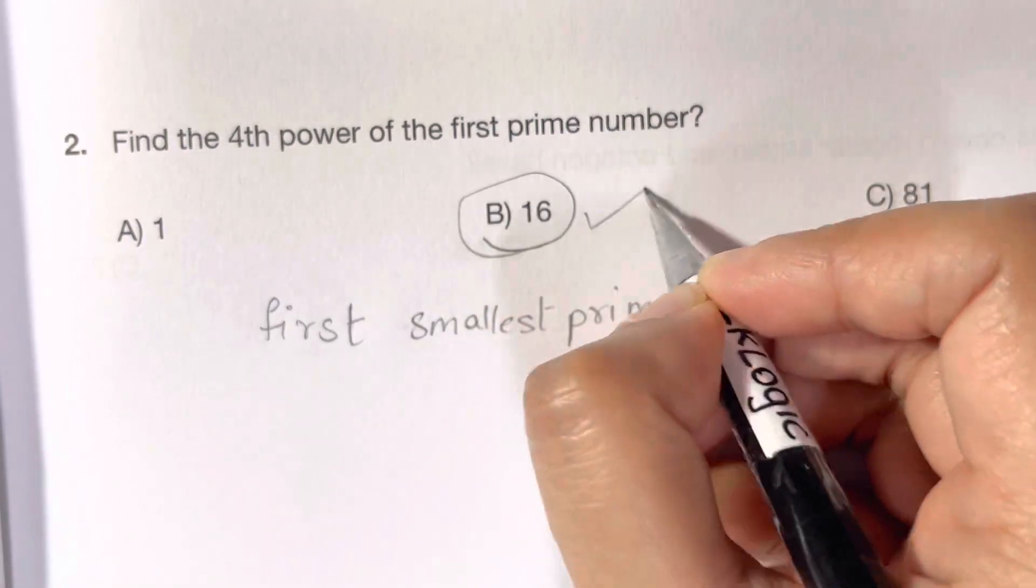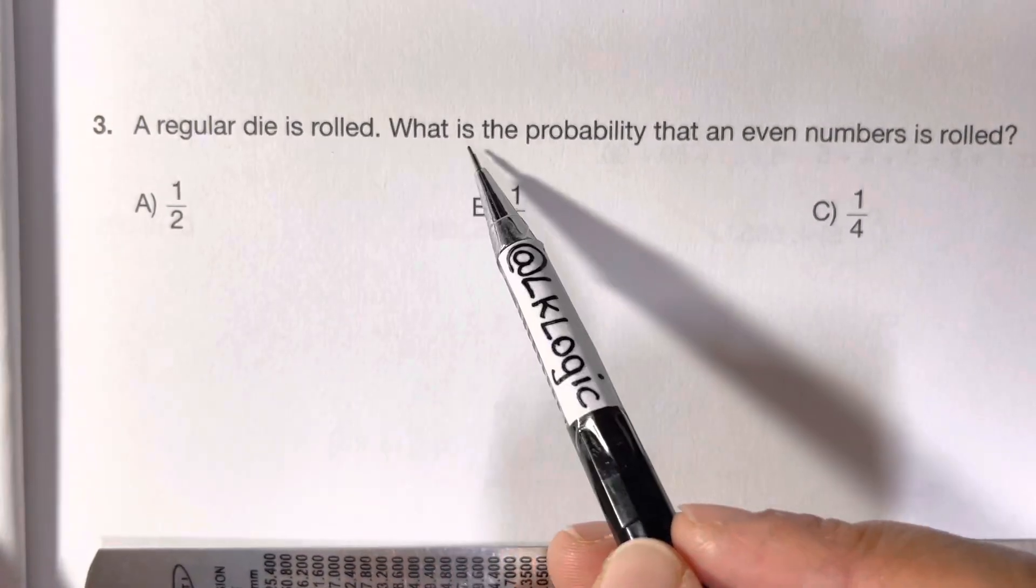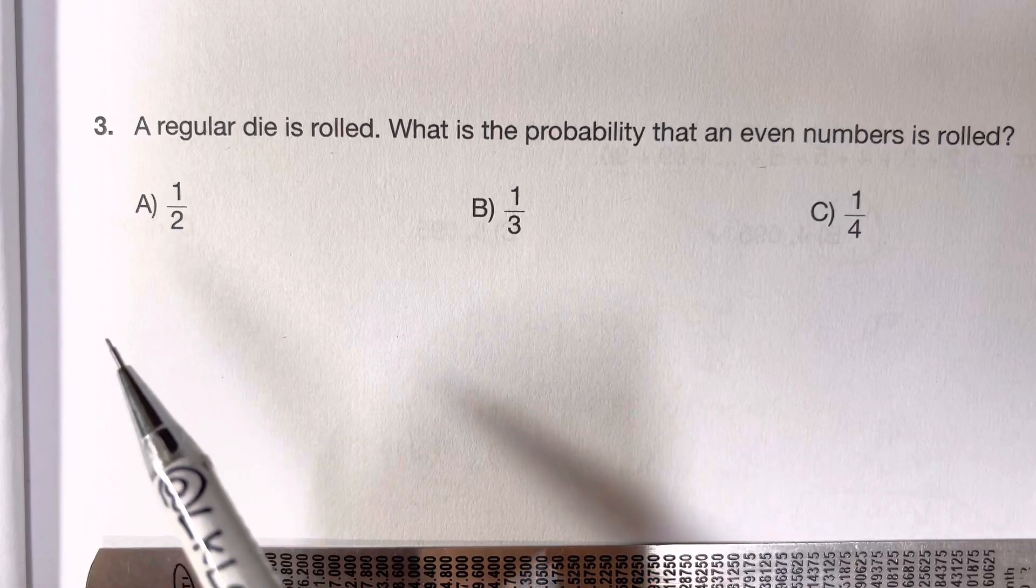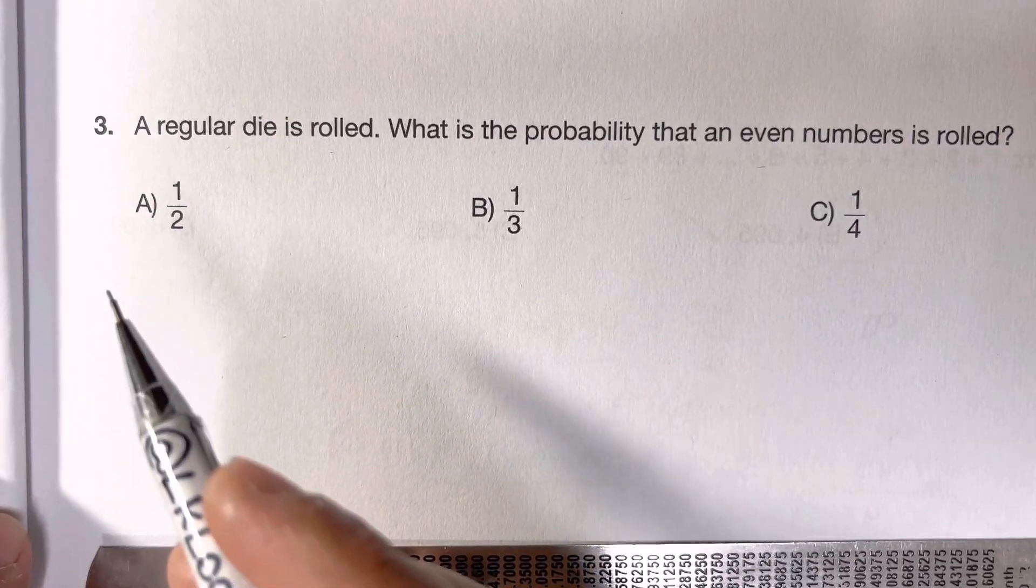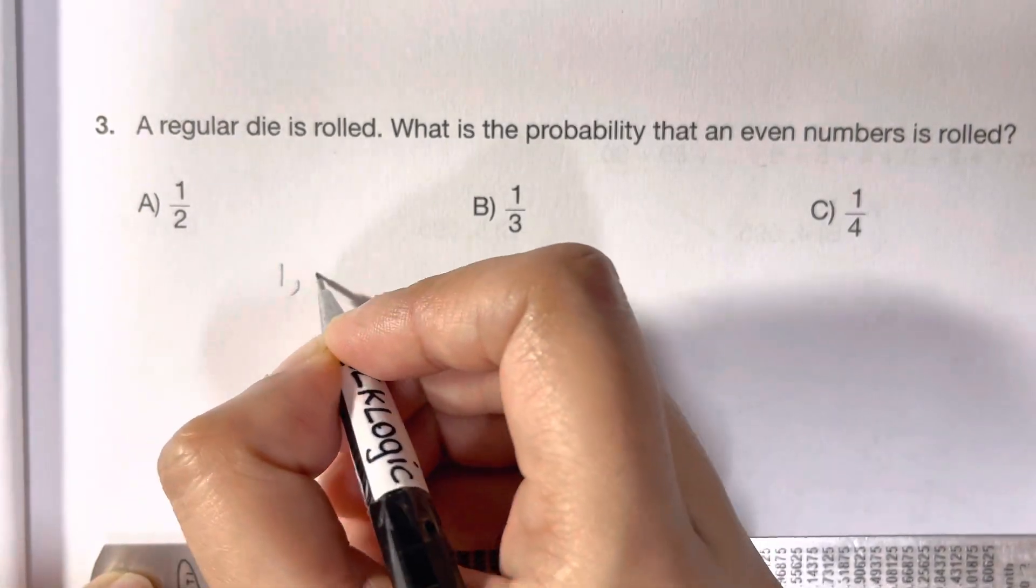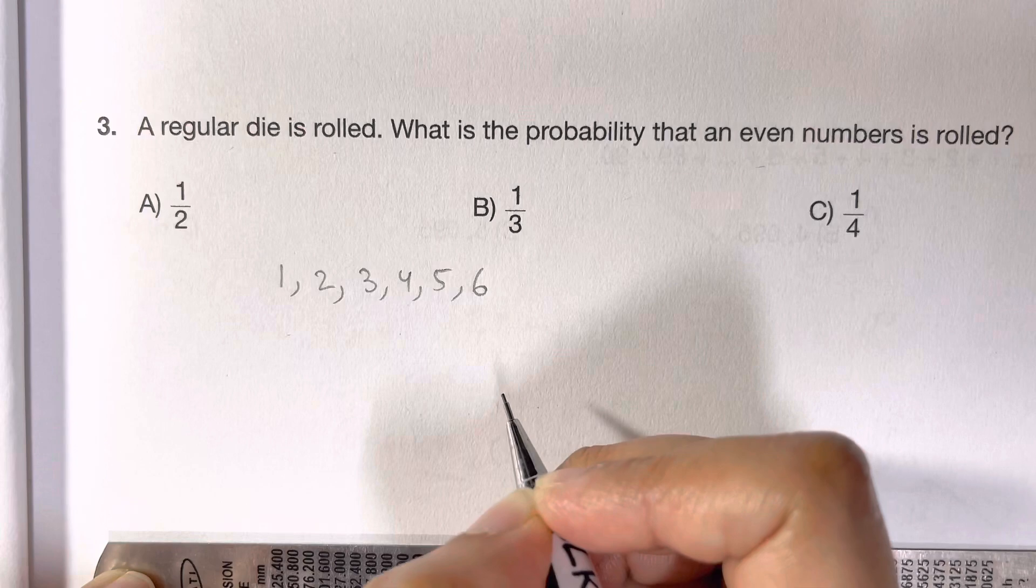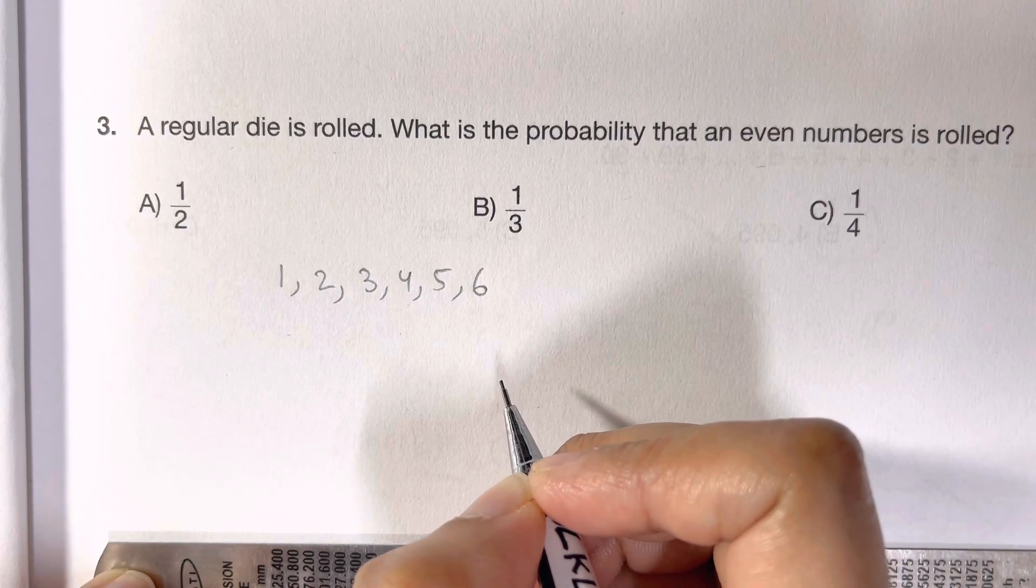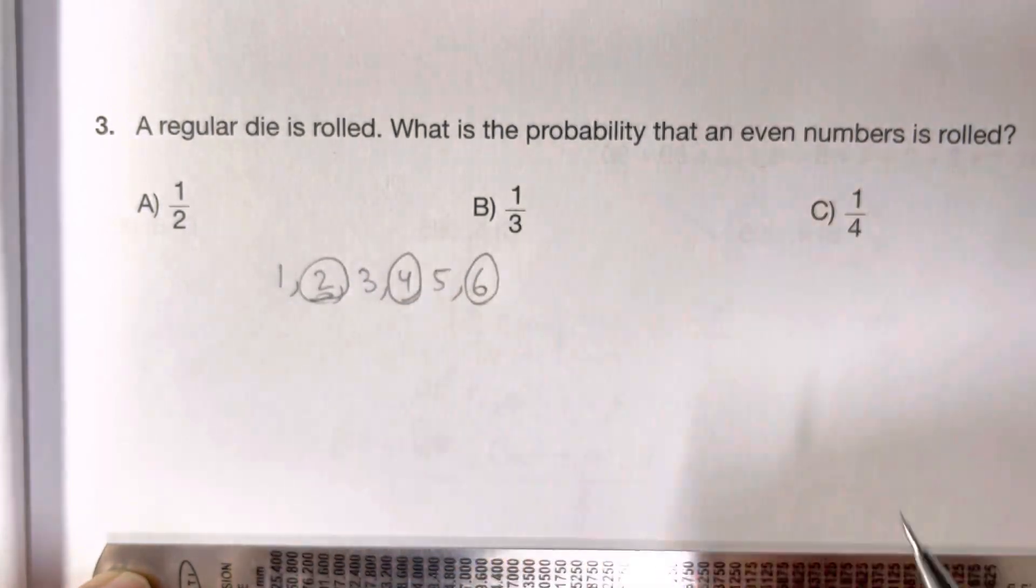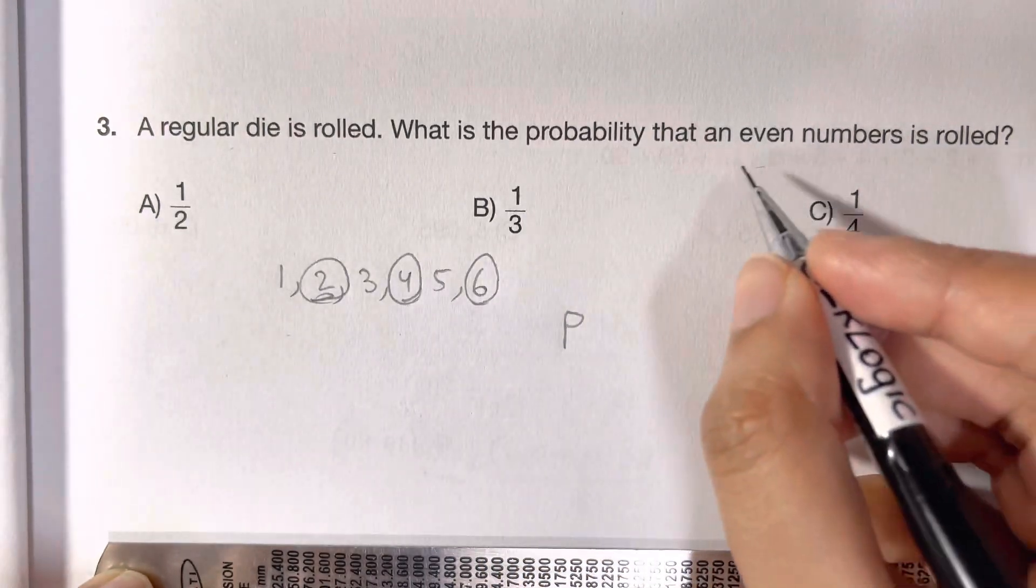So here we have question number 3, which says a regular die is rolled, what is the probability that an even number is rolled? When a die is rolled, what are the outcomes? When a regular die is rolled, there are 6 outcomes: 1, 2, 3, 4, 5, and 6. How many are even? Only 2, 4, and 6.